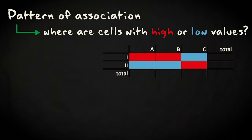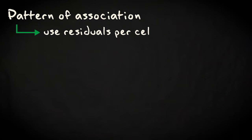Another aspect of interest when interpreting contingency tables is to get an idea about the pattern of association and find out in which cells particularly high or low values are observed. For this purpose, the residuals per cell can be used.